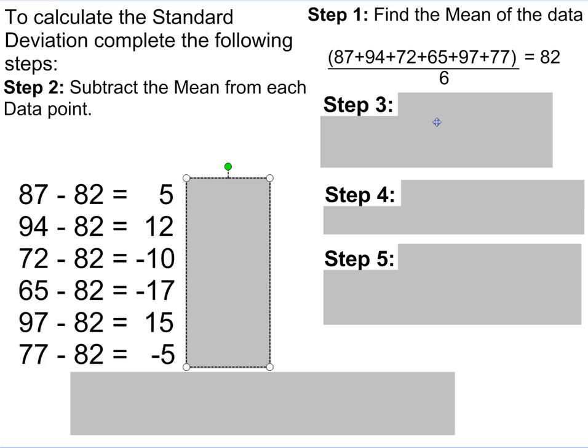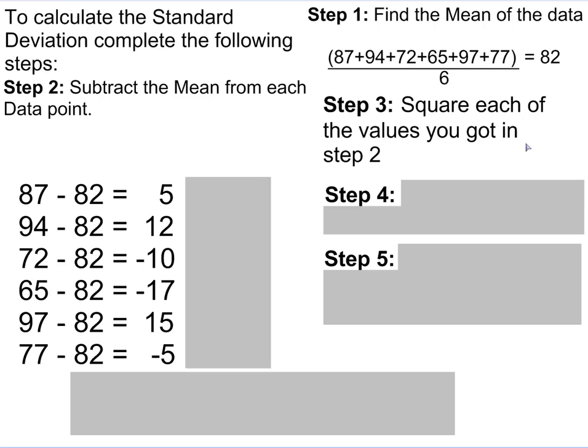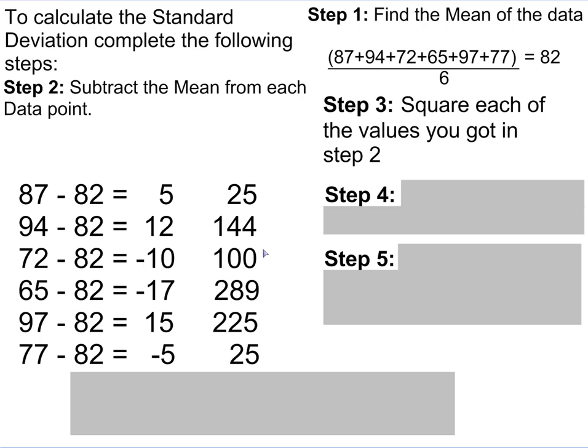Step 3, in defining standard deviation, is to take the square of each of those numbers that we just got. So in this case, it's 25, 144, 100, 289, 225, and 25. Notice that all these values are positive, because if you put in negative 10 squared, negative 10 times negative 10 is 100.